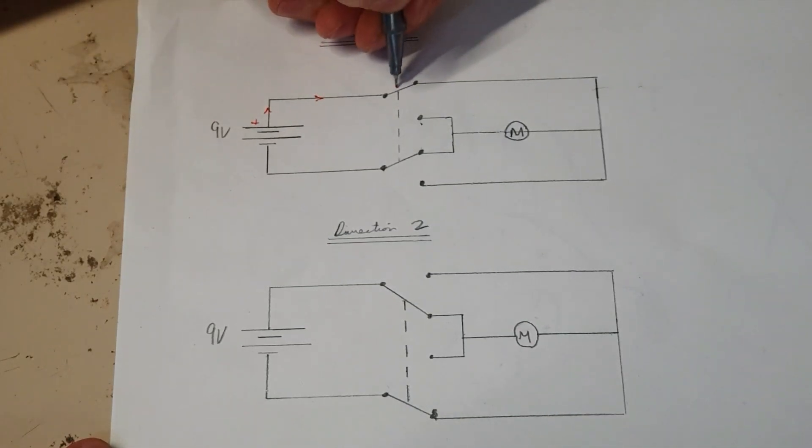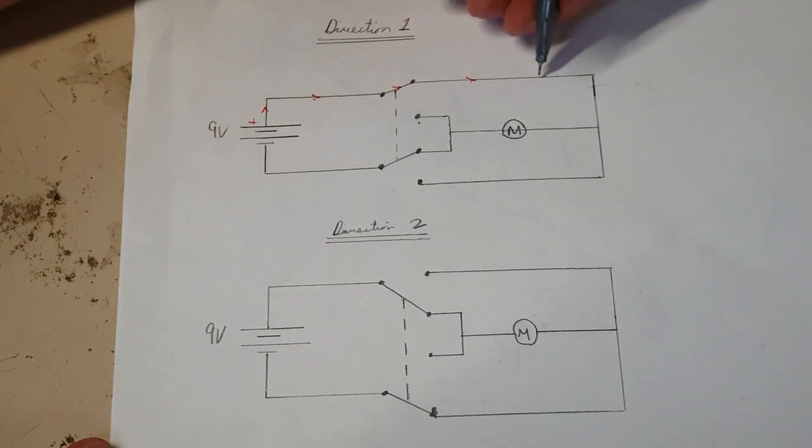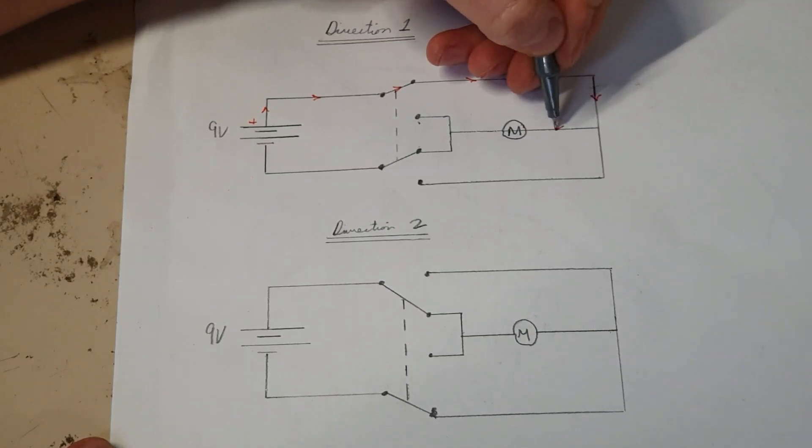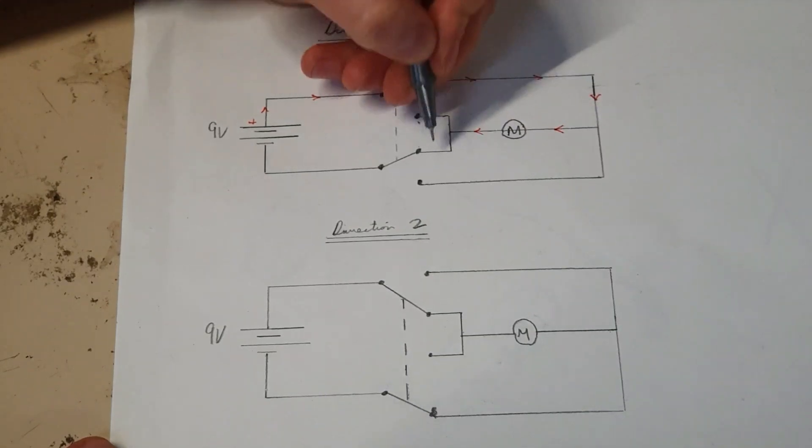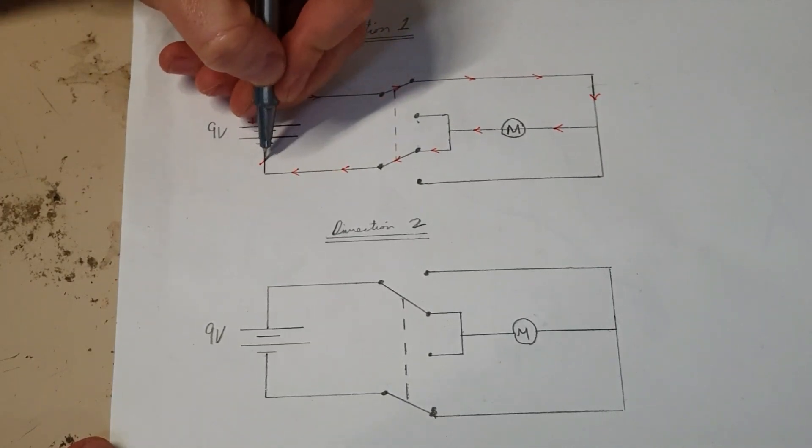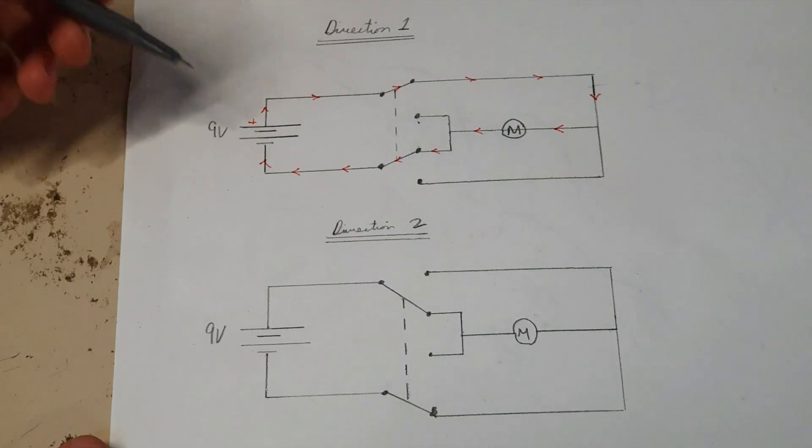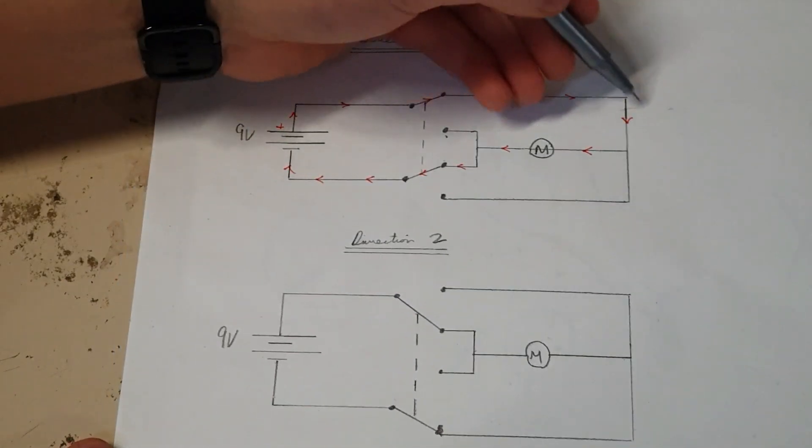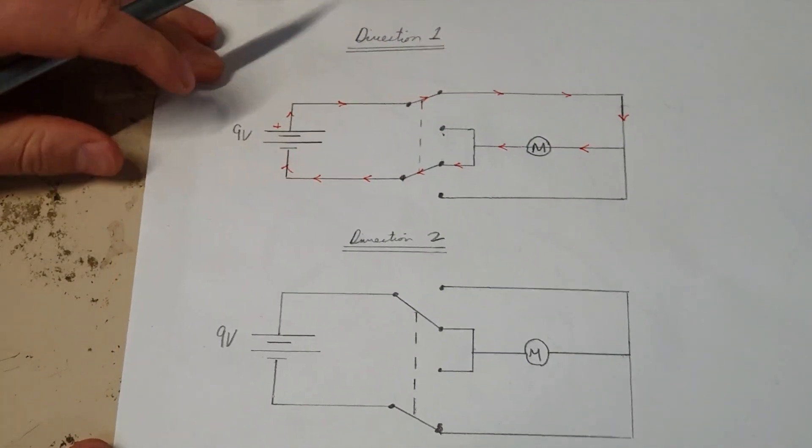So it's going this direction through this part of the switch. It's going through the motor then this direction. All the way back to the negative. So that's one direction. So again, it's going all the way around here and back through the motor this direction.